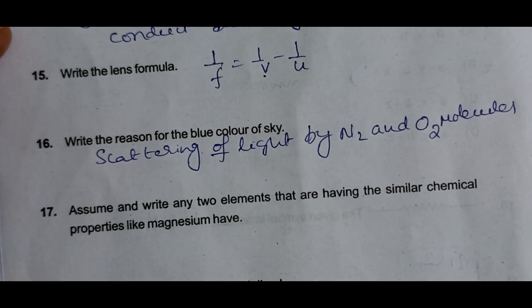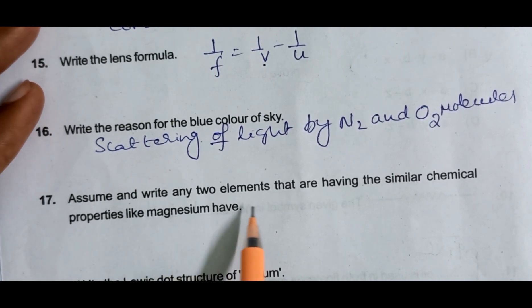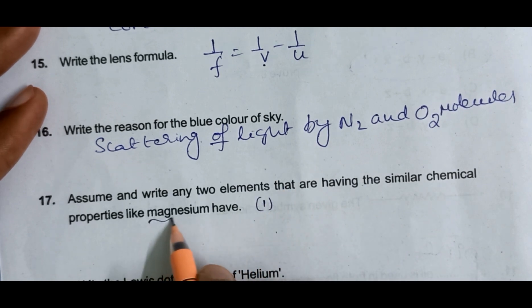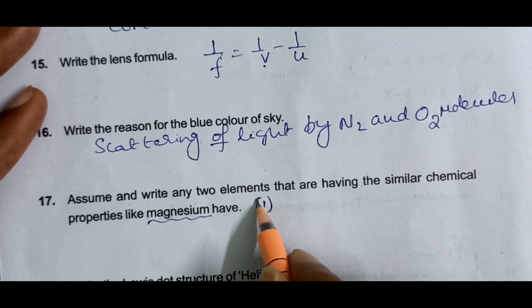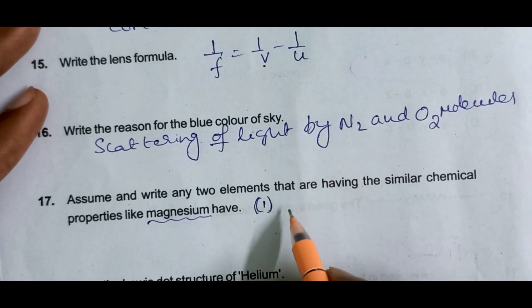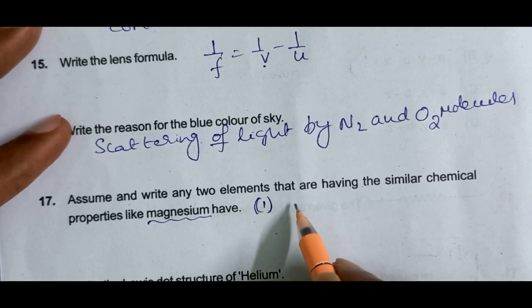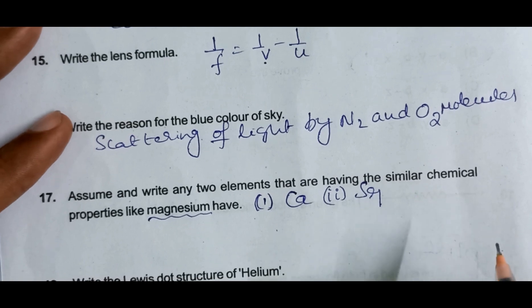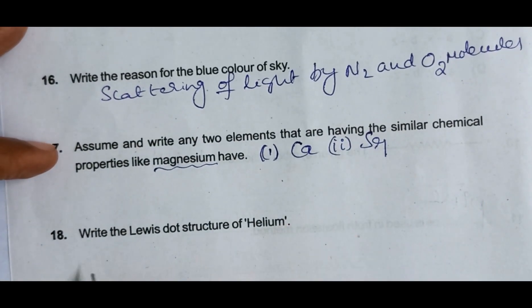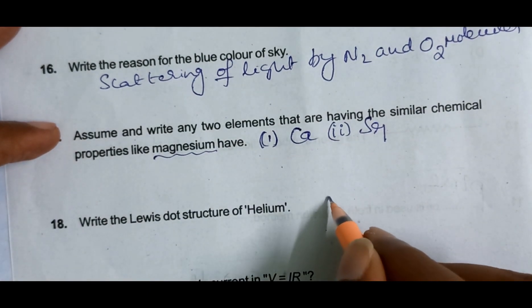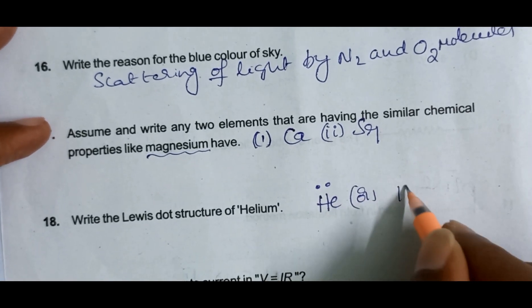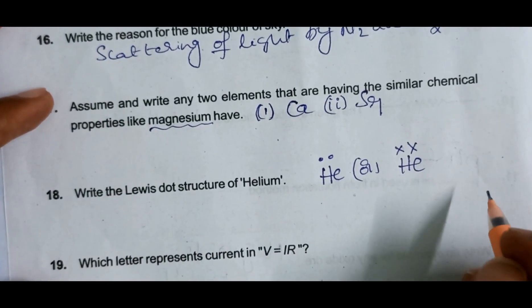Assume and write any two elements that are having similar chemical properties like magnesium have. Magnesium has valency 2, charge plus 2, so elements with valency 1 in group 2A: calcium, strontium, barium, radium. Next, 18th question: write the Lewis dot structure for helium. Helium symbol He, two dots, or two cross symbols.